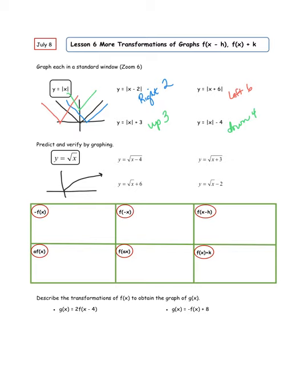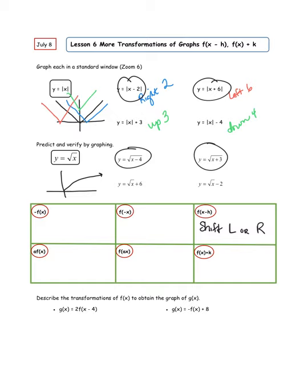So let's fill in the rules. For f(x − h): when you have something with the x, those are going to be shifts — translations to the left or right. It's going to go to the left if it's plus, and to the right if it's minus. Does that seem backwards to you? It certainly does to me. X's always do the opposite of what we expect them to do — so keep that in mind. We also talked about f(ax), and that one also does backwards from what we think.